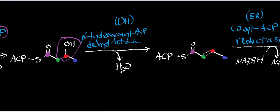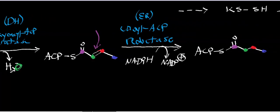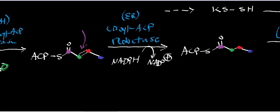In the next step, we have a dehydration catalyzed by beta-hydroxyacyl-ACP dehydratase — the reverse of enoyl-CoA hydratase in beta-oxidation, where water was added. Here we form a trans-alkene and lose water. That oxygen is the one that leaves as part of water when we form this E-configuration alkene.